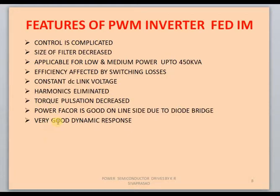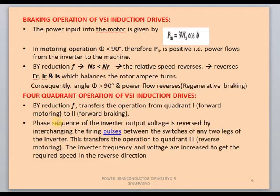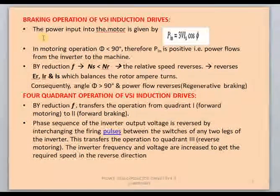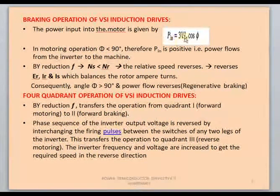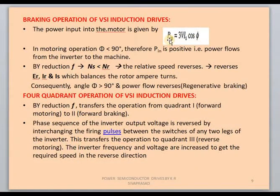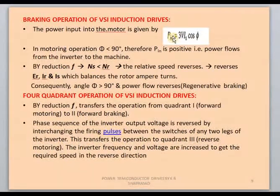It produces very good dynamic and transient responses. Now we move on to braking operation and four-quadrant operation of VSI. For the braking operation, the power input to the motor is P_m = 3 × V_phase × I_phase × cos(φ). When power is positive, power transfers from inverter to the machine — this is motoring mode, where φ should be less than 90 degrees. To operate in braking or regenerating mode, the power flow is opposite to motoring.